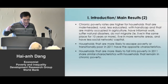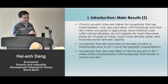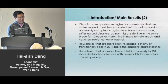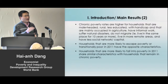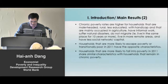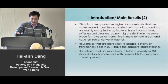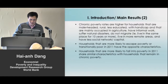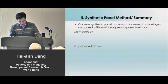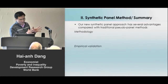Households more likely to escape poverty have the opposite characteristics. We can also look at characteristics of households more likely to fall into poverty — the non-poor in 2005 who fall into poverty in 2011. We see that those households also share similar characteristics to households that remain in chronic poverty. Before continuing with results, let me spend some time explaining our method.